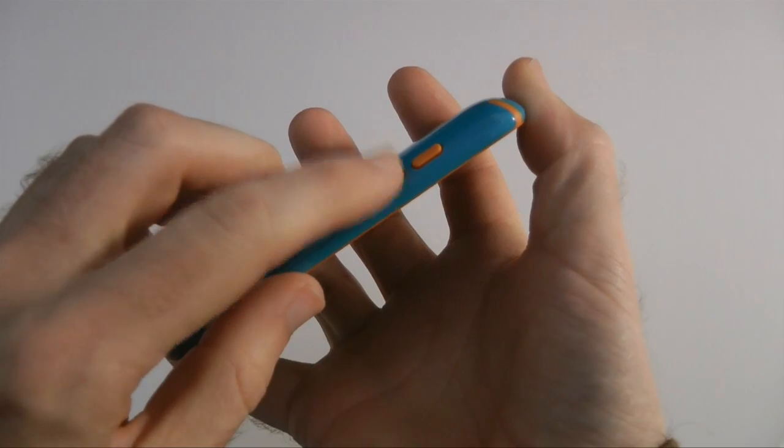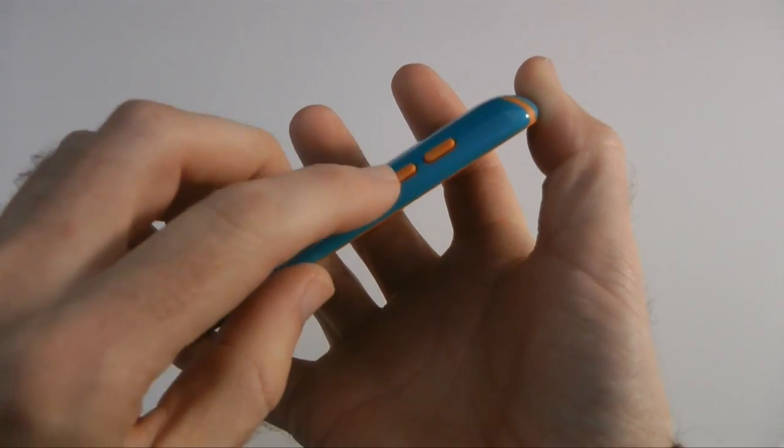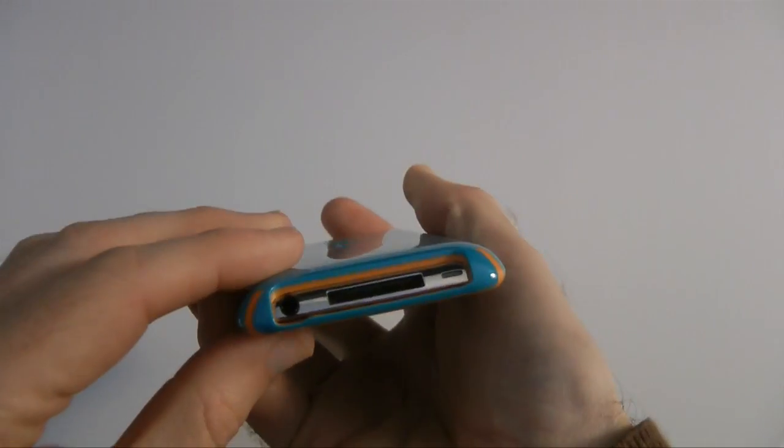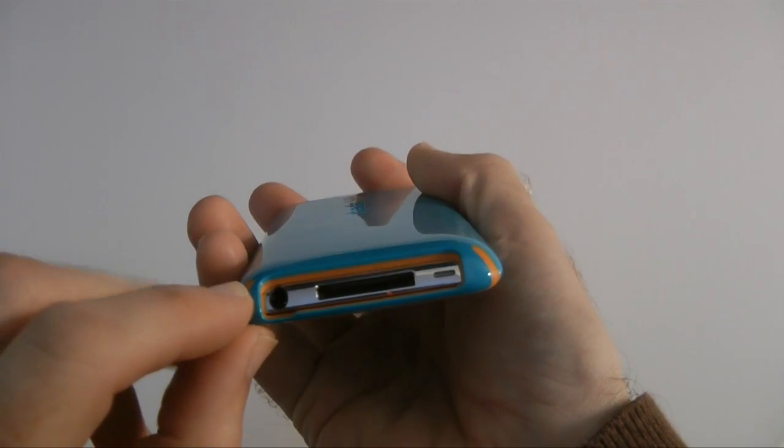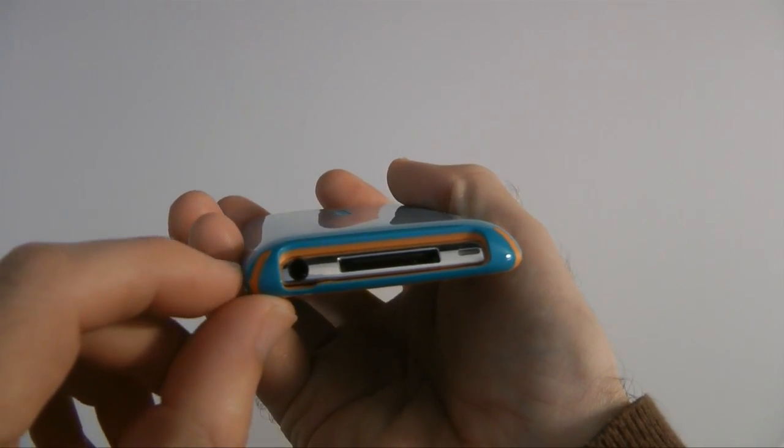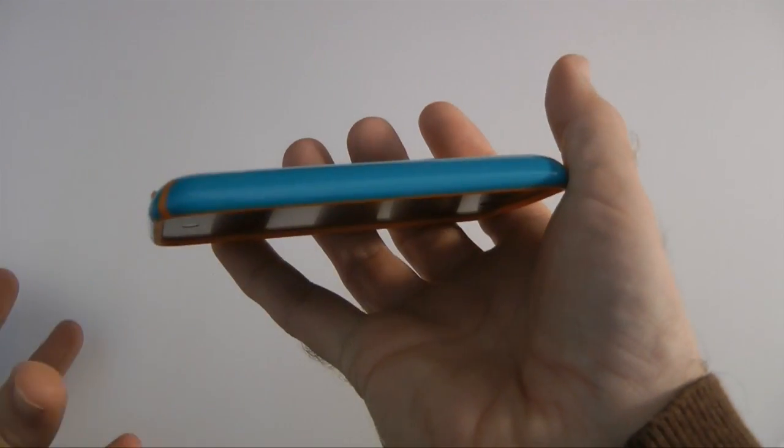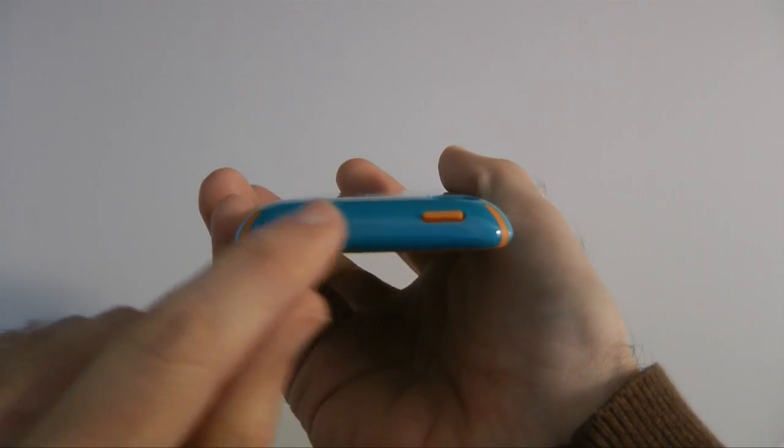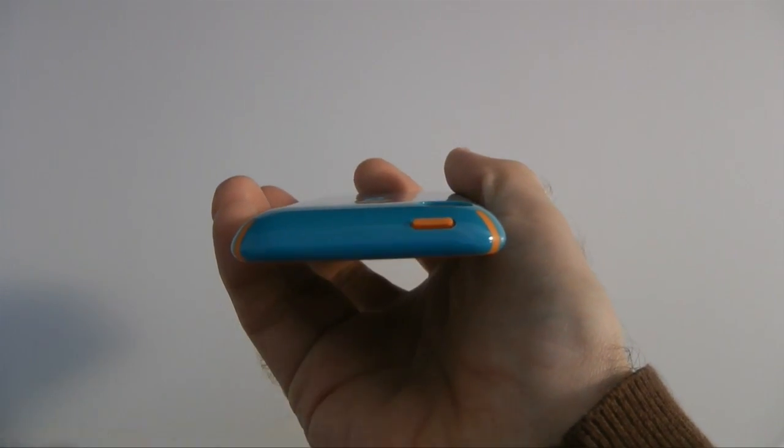On this side we've got rubberized sections for the volume up and down. On the bottom, a nice large cutout there for the speaker, dock connector and the earphone jack. This side is completely blank and then on the top we've got that power on/off button.